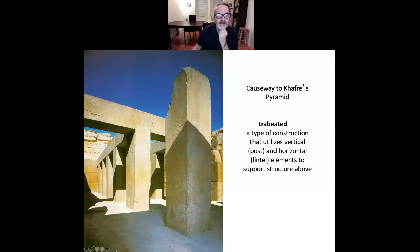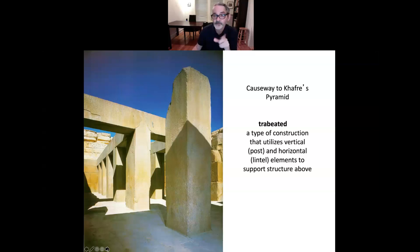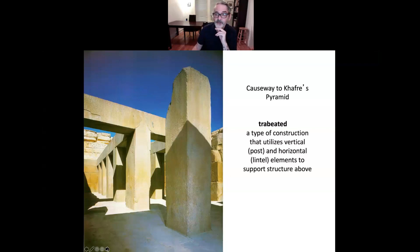That type of post-and-lintel construction is called trabeated, and was utilized by the Egyptians and the Greeks. When we get to the Romans, they introduced the arch, which made a huge difference in what they could build.